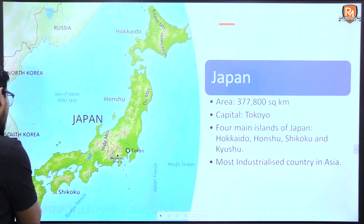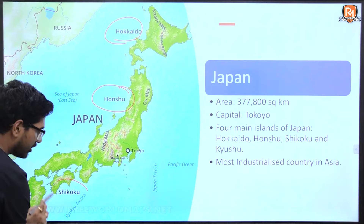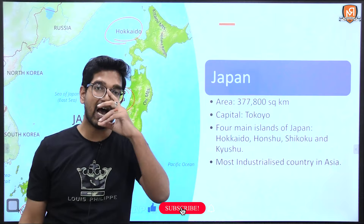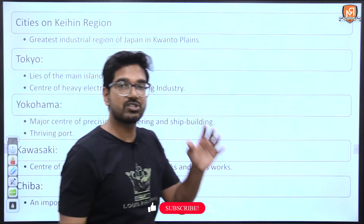Japan is divided into four major islands, though there are various small islands as well. The first is Hokkaido, the second is Honshu, the third is Shikoku, and the last is Kyushu. The capital of Japan is Tokyo, and it is one of the most industrialized areas in Asia.